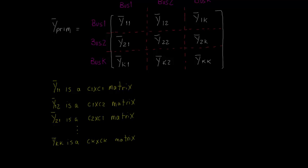Now, the following question arises: if we have a system with a great amount of elements, how can we use each element's Y-primitive to build a Y-system matrix that represents the entire system?